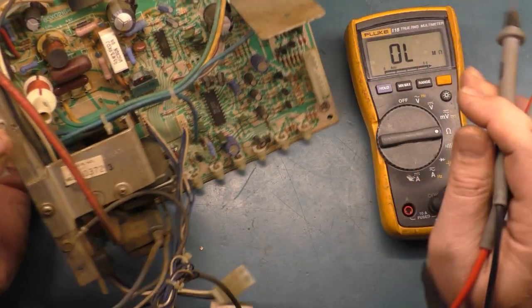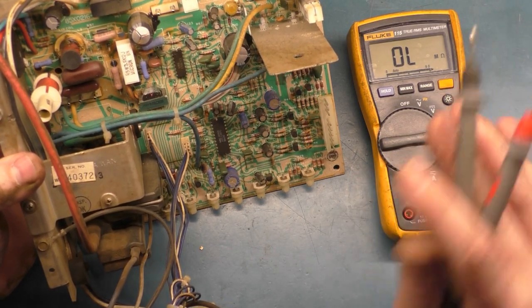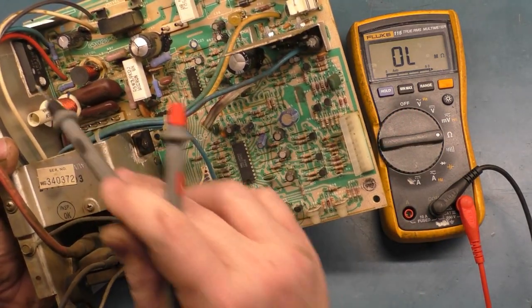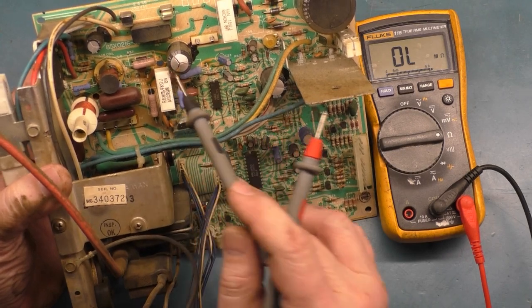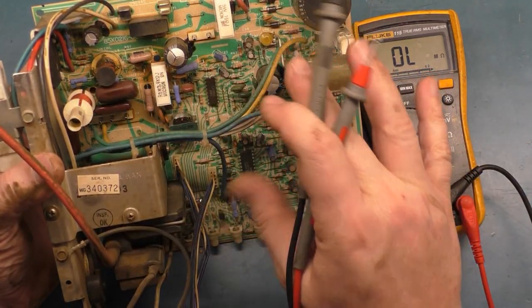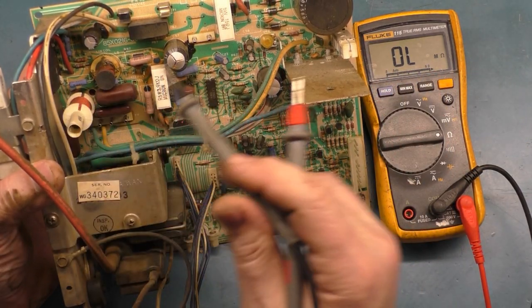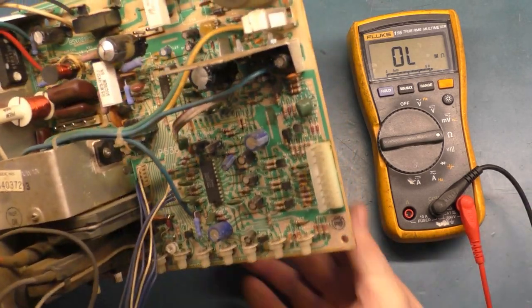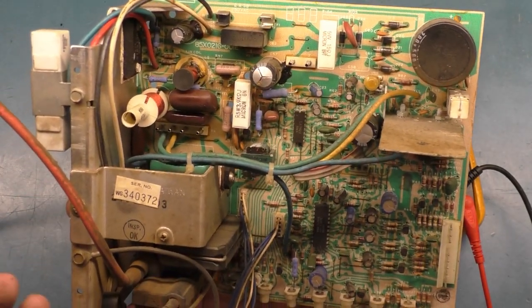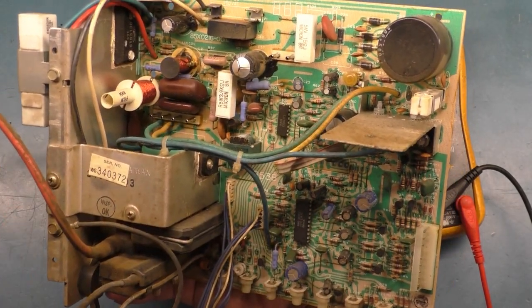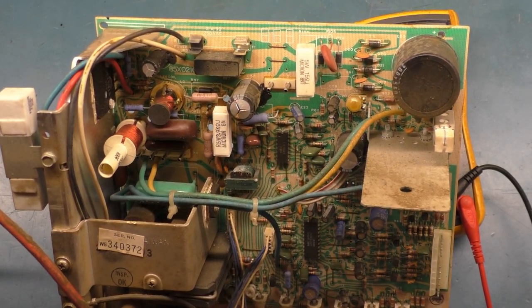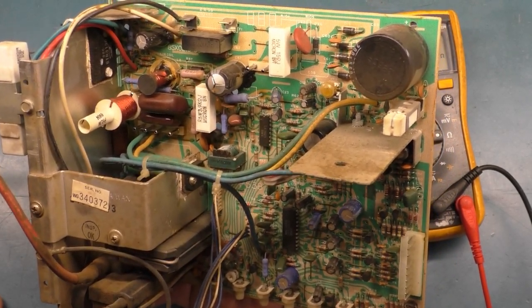So we have a shorted voltage regulator, we have a shorted HOT, we have D20 and D21 are shorted. So we've got four components to replace, but I don't know if the HOT and the voltage regulator were casualties of the no-isolation transformer, or if it was because of C57, or if all those were a combination of because of the transformer missing as well. So we've got to do a cap kit, we've got to do a new HOT, a new voltage regulator, new D20, new D21. If we turn it on and we have collapse, then we'll troubleshoot that at that time.